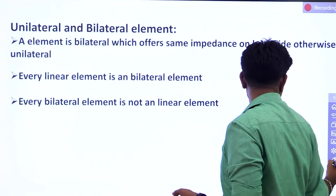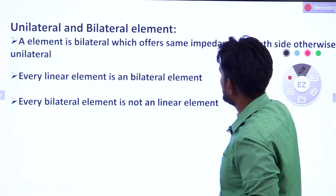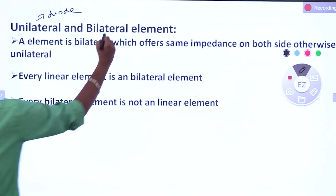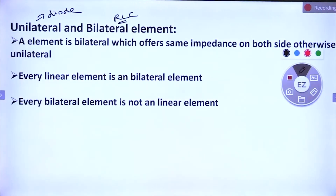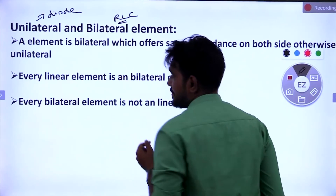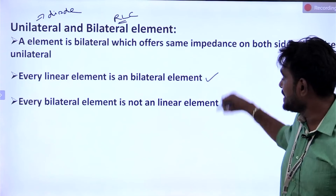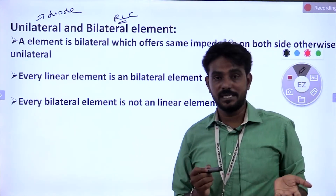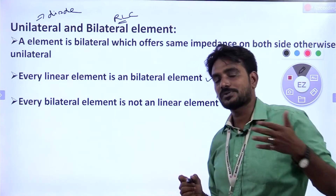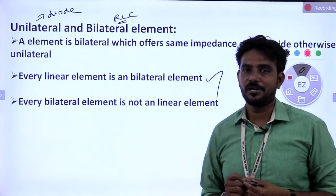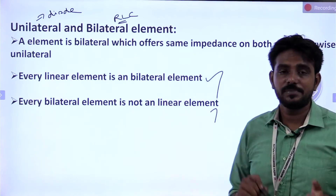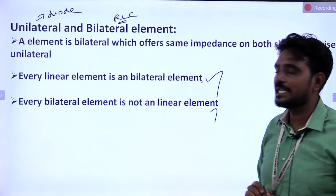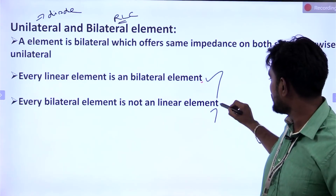Diode is a unilateral element. Bilateral element is RLC — this is bilateral element. Every linear element is a bilateral element, but not every bilateral element is linear. If one element is linear, it must be bilateral, and impedance on both sides should be same. Unilateral element — one side is different; that is unilateral element. Every linear element is bilateral, but every bilateral element is not necessarily linear.